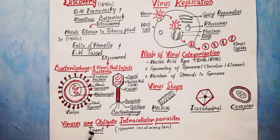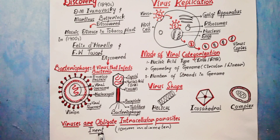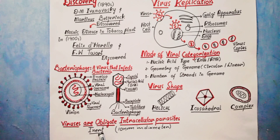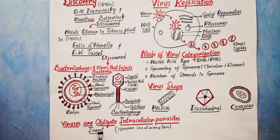We have another term — inert — when we talk about viruses. Viruses are inert, which means they cannot move around on their own. Viruses are incapable of metabolizing and replicating on their own. They require a host cell for their replication, metabolization, and survival.